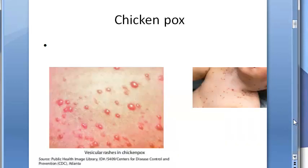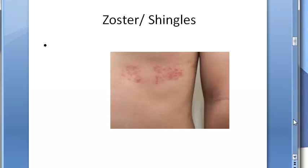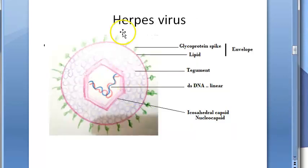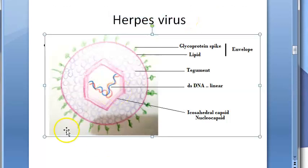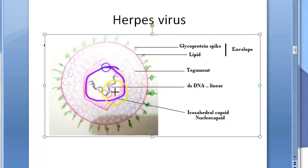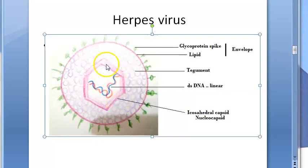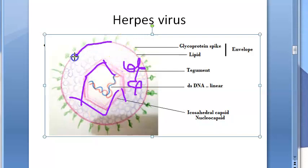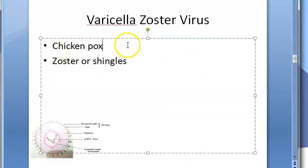Here are some photos of chickenpox vesicular rashes and zoster shingles. The herpes virus has double-stranded linear DNA with an icosahedral nucleocapsid, a tegument layer, and a lipid envelope to which glycoprotein spikes are attached.